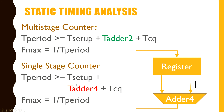t_adder for a 4-bit adder (t_adder4) will be quite higher than t_adder for a 2-bit adder (t_adder2). That means the time period of a single-stage counter will be more than the time period of a multistage counter. Therefore, multistage counters can work at a quite higher operating frequency compared to single-stage counters.